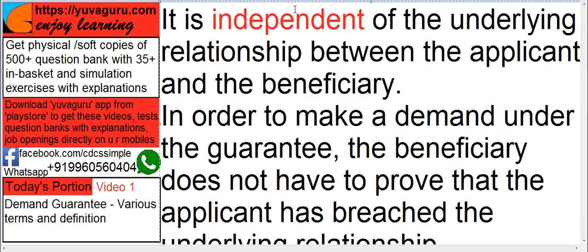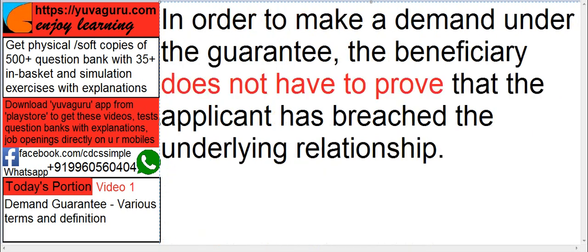The demand guarantee is independent of the underlying relationship between the applicant and the beneficiary — it has nothing to do with any other relationship except this guarantee. And the next important point is: the beneficiary does not have to prove that the applicant has breached the relationship. This raises the question: if the applicant performs and even then the beneficiary demands payment, then what? As a guarantor, the documentation in that guarantee should be so arranged that the beneficiary cannot defraud you. That document should be incorporated in the guarantee itself.